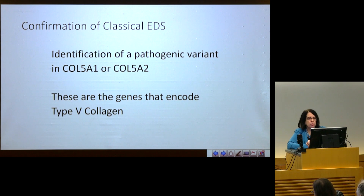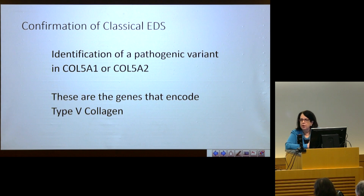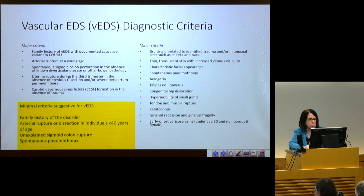Confirmation of classical Ehlers-Danlos syndrome is through molecular testing. We know that mutations in type 5 collagen cause the classical type, and the two genes that encode type 5 collagen are COL5A1 and COL5A2. If you can find a pathogenic variant in COL5A1 or COL5A2, you confirm the diagnosis of classical Ehlers-Danlos syndrome.